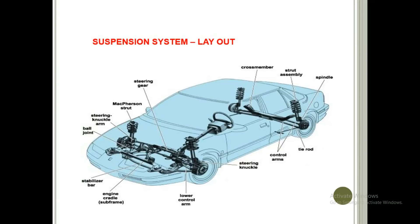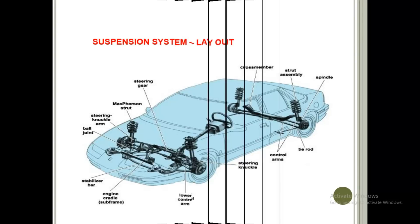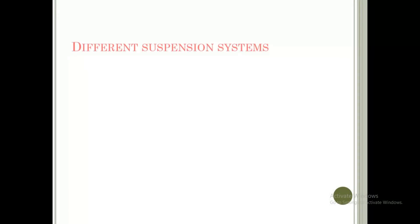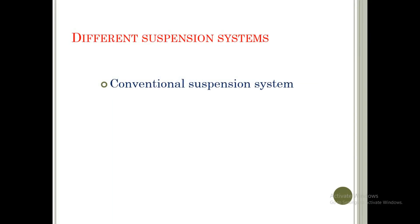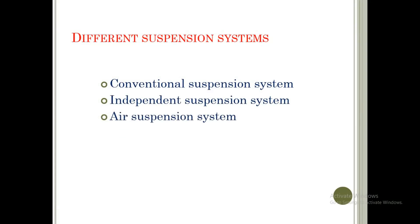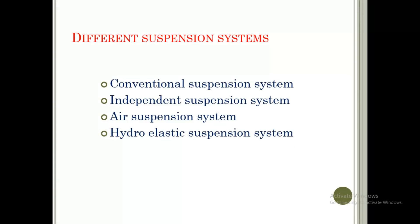What are the different suspension systems? The first is the conventional suspension system, the second is the independent suspension system, the third is the air suspension system, and the last one is the hydroelastic suspension system. Let's check them out one by one.